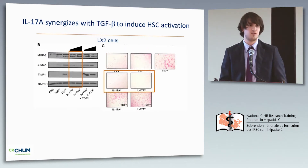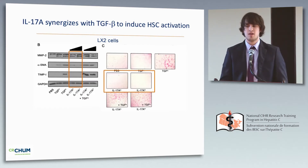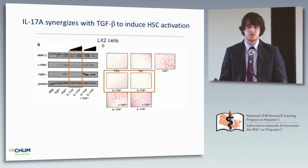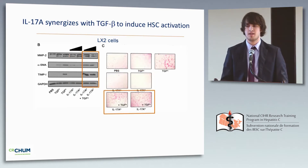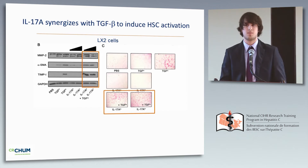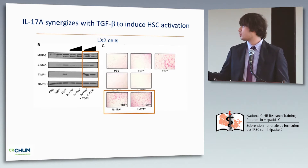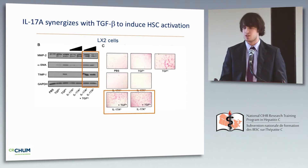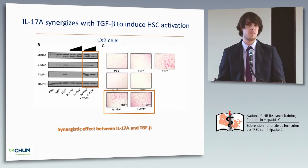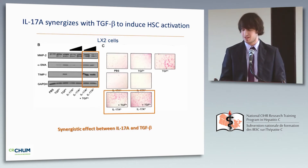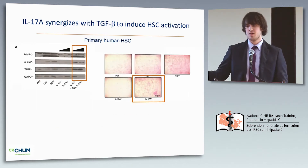When we tested IL-17A, we used two doses: a low dose measurable in patient plasma, and a high dose known from other contexts. At both doses, IL-17A alone could not activate hepatic stellate cells. However, when we combined IL-17A with suboptimal doses of TGF-beta, we observed robust and strong activation of stellate cells with high production of TIMP1, alpha-smooth muscle actin, and collagen type 1, suggesting a synergistic effect between IL-17A and TGF-beta.